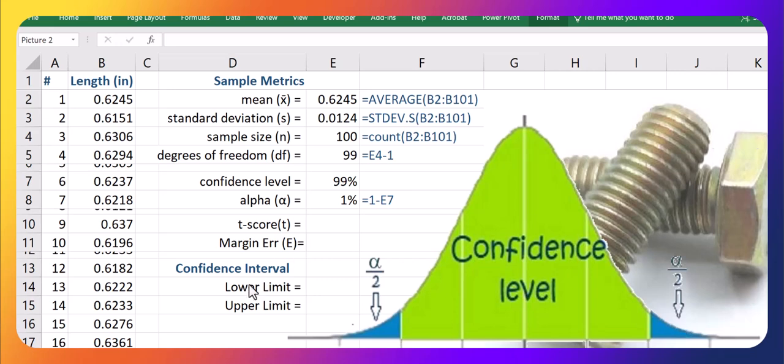So if you can see, the confidence level is always that area in the middle, so in this case 99%. And alpha is the area to the outsides of that confidence interval, split between the two tails, so each tail has alpha over 2% in it.